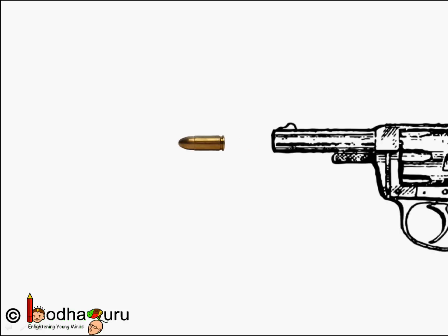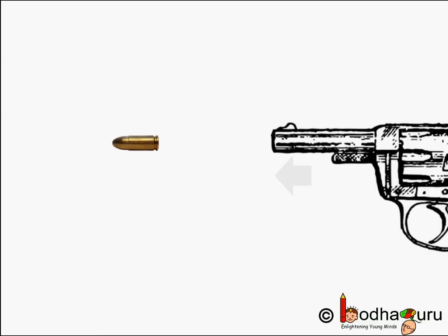Similarly, when a gun is fired, it exerts a forward force on the bullet. The bullet too exerts an equal and opposite reaction force on the gun, and this reaction force results in the recoil of the gun.